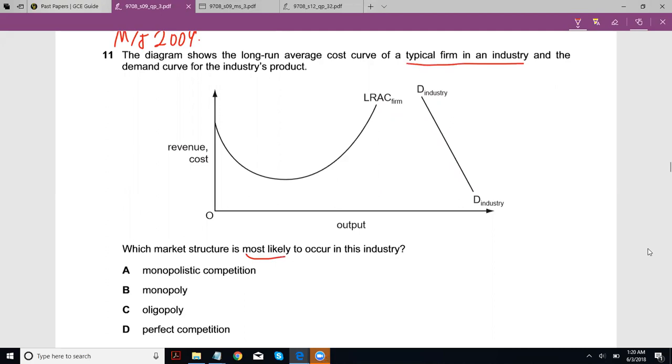There are two things you need to look at in this particular question. First, you need to think about the minimum efficient scale, and second, you need to think about the number of firms in the industry. So how many firms does the industry normally have? That will help you solve this question.